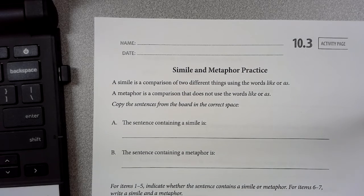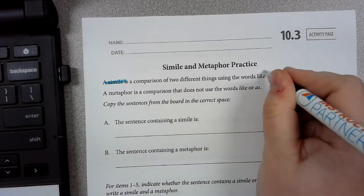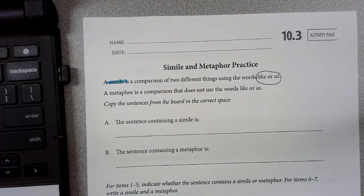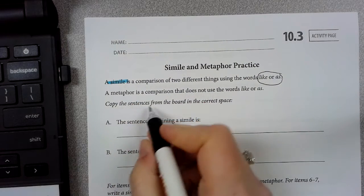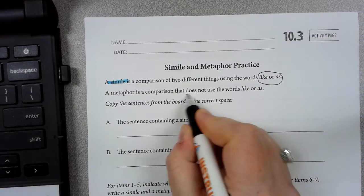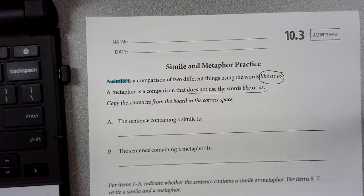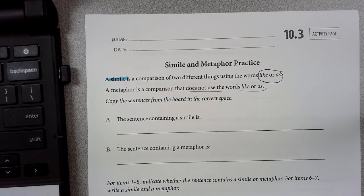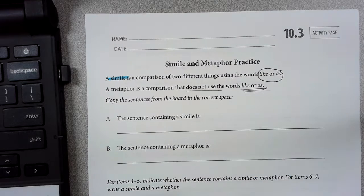A simile is a comparison of two different things using like or as. Now the like or as is the big thing that sets a simile apart from a metaphor. A metaphor is a comparison that does not use the words like or as. It's comparing everything, but it cannot have the word like or as. If it has the word like or as, it's not a metaphor, it's a simile.